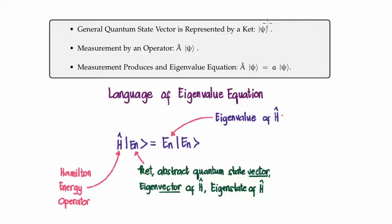So we start out with our abstract quantum state, or our ket, and we operate on it with an operator, and that produces an eigenvalue equation.